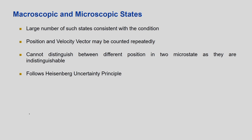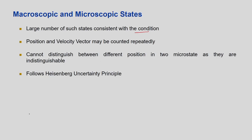There is a catch: the position and velocity vector may be counted repeatedly. Let us say molecule 1 has velocity V1 and position vector R1, molecule 2 has V2 and R2, molecule 3 has V3 and R3 — all vectors. This is one arrangement. But there can be another arrangement which looks the same in terms of positions, only the labeling is different — that is, what was molecule 1 in the first microstate becomes molecule 2 in the second.